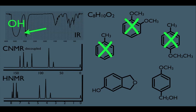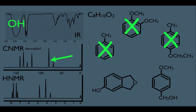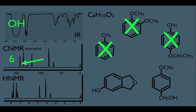Now let's look at the CNMR. Notice it's in the decoupled mode, so there's no splitting, which means the number of peaks should correspond to the number of carbons in our molecule. And notice we have one peak here, two, three, four, five, and six. Therefore our molecule has six types of carbons.